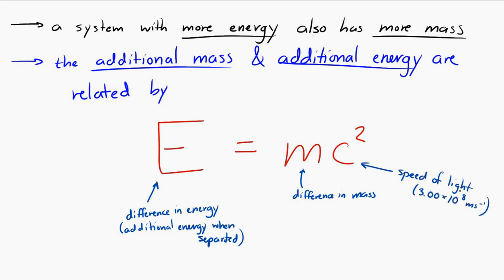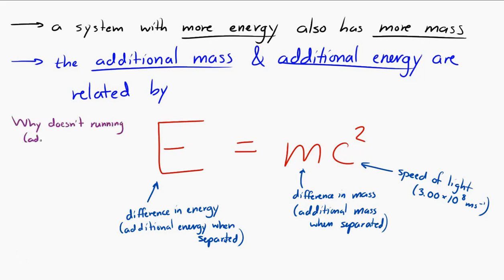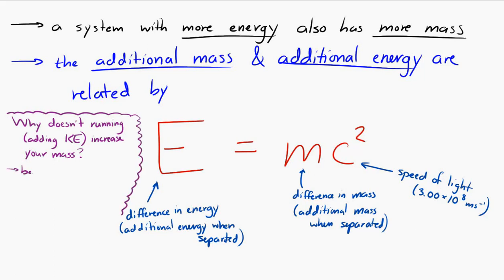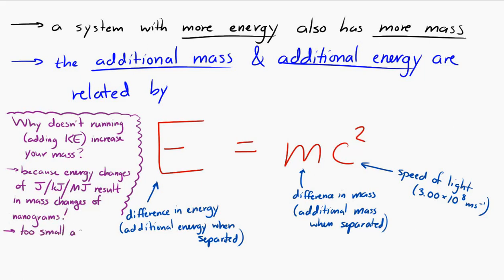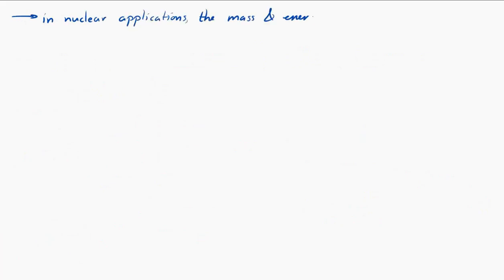This is strange: something with more energy also has more mass. The next question is, why don't we notice this? If I start running, I've gained kinetic energy — why don't I notice I've gained mass? In everyday life, energy changes measured in joules or kilojoules result in mass differences around a nanogram — a very, very small increase. So it is true that your mass increases when you gain energy, but by an imperceptibly small amount. In nuclear applications, however, these mass and energy changes are noticeable with sensitive instruments. This phenomenon wasn't discovered until people started examining the nucleus because these changes only become evident on very small scales.